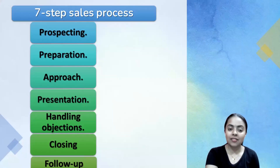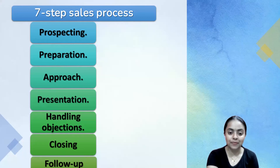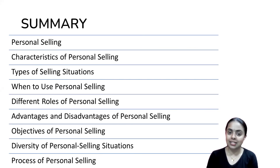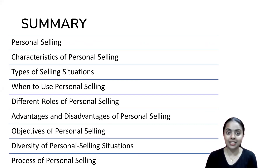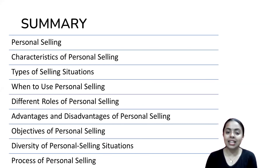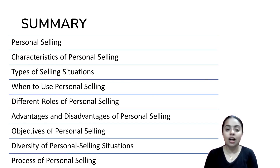This is the seven-step sales process: prospecting, preparation, approach, presentation, handling objections, closing, and follow-up. In this unit we discussed personal selling definitions, characteristics, selling situations, types of marketing, roles of personal selling, advantages and disadvantages, qualitative and quantitative objectives, types of salesperson, different selling styles, and the seven-step sales process from prospecting to follow-up. Thank you.